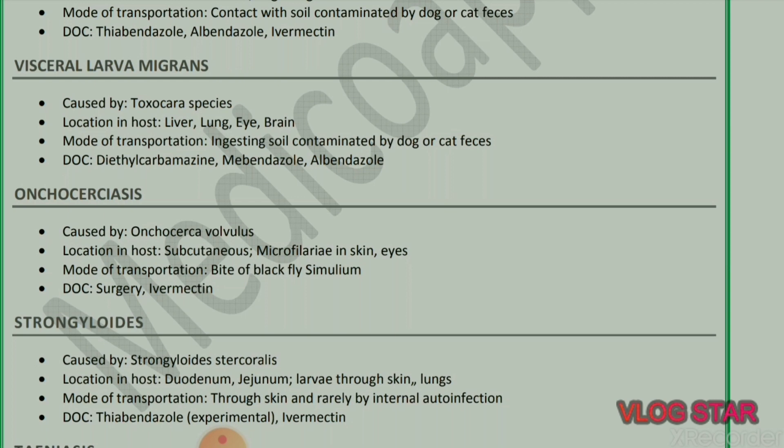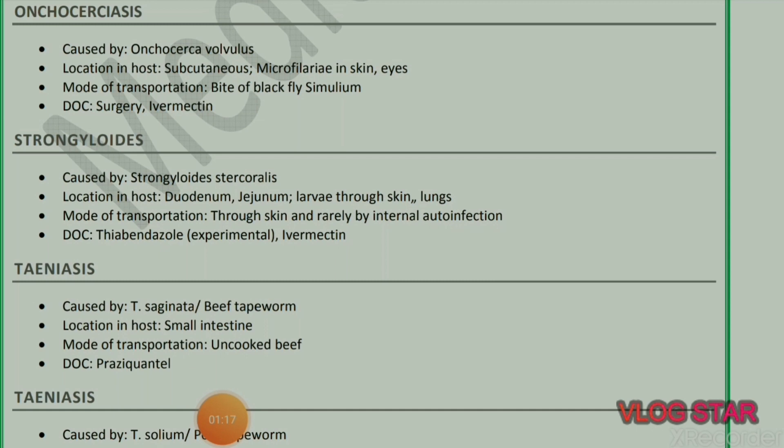Next parasite: Strongyloidiasis, caused by Strongyloides stercoralis. Location in host: duodenum and jejunum; larvae pass through skin and lungs. Mode of transmission: through skin and rarely by internal autoinfection. Drug of choice: thiabendazole (experimental) and ivermectin.